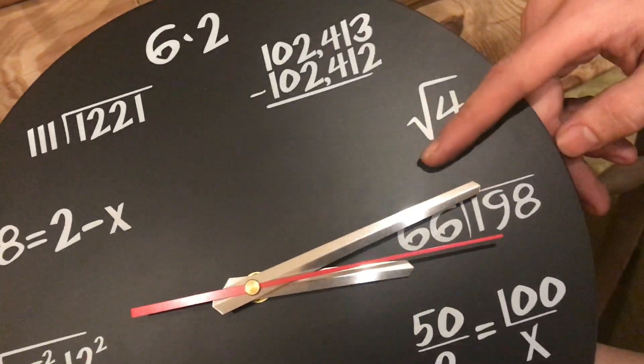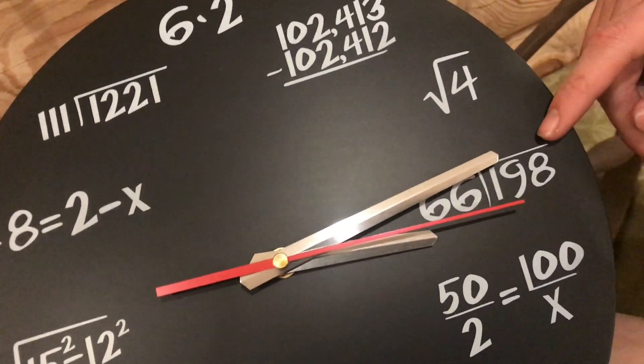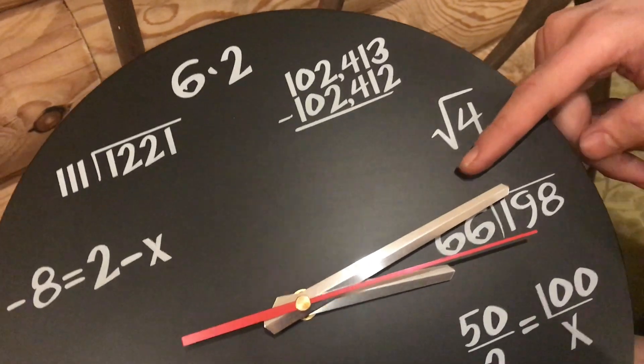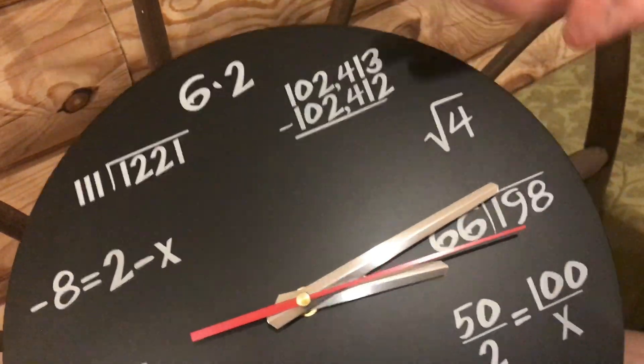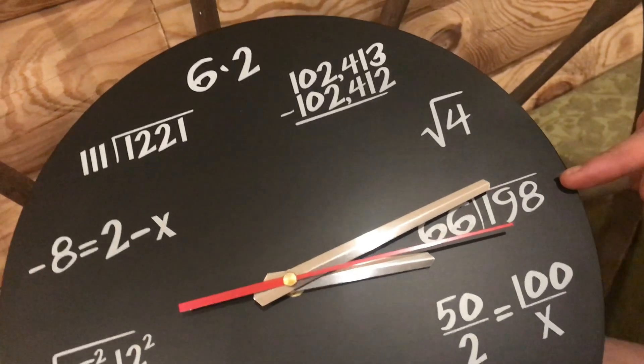This here, we have 198 divided by 66, that's 3, because 66 times 3 equals 198.